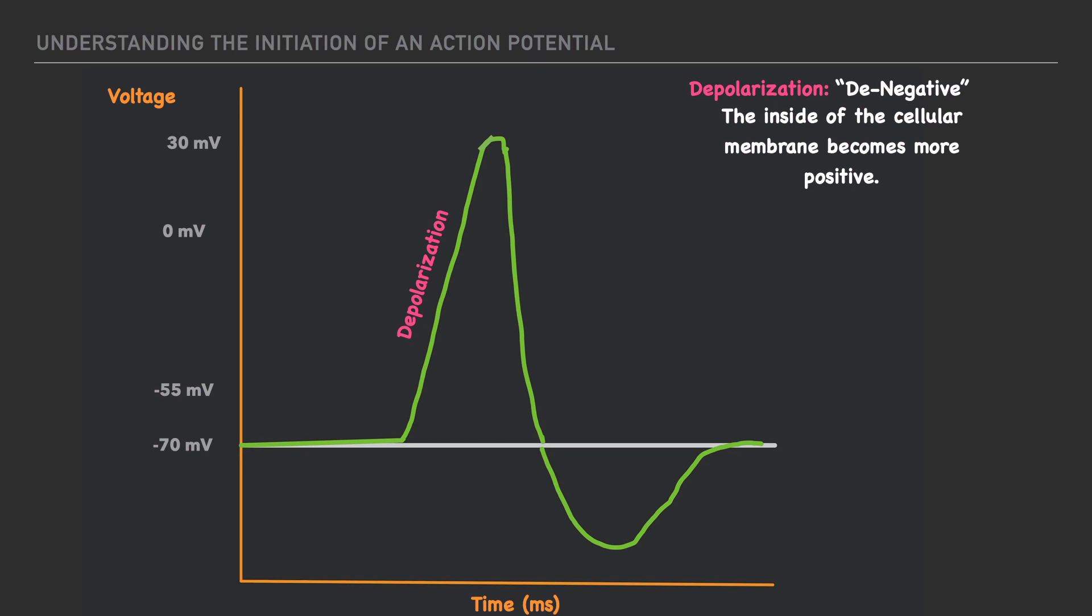And it's through the process of repolarization that we renegate, and all that means is that the inside of the cell begins to become more negative, moving back towards our resting membrane potential.